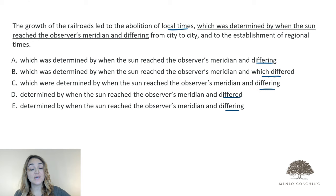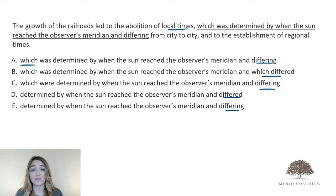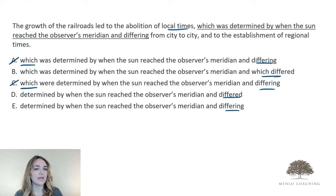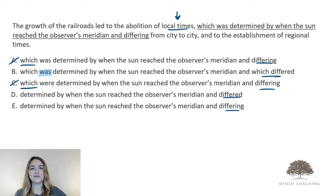But with answer option A, we used a relative clause — this 'which' phrase in the first portion — and then a participial modifier in the second portion. And that's not going to work for us. If we have two modifiers that are referring back to the same thing, they need to be of the same form. And answer option C falls victim to exactly the same mistake. Now, answer option B corrects that error, but it presents a new error that should be pretty low-hanging fruit. We can see that we have a difference of singular versus plural with 'was' versus 'were.' And what did we just say we were referring back to? Local times. And local times are plural. So we can get rid of B.